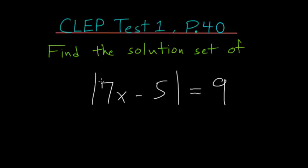The first part is when this inside expression here, 7x minus 5, evaluates to a positive number. In that case, the absolute value bars do not affect it. The second case is when 7x minus 5 evaluates to a negative number, and then the absolute value bars will flip that to a positive number.